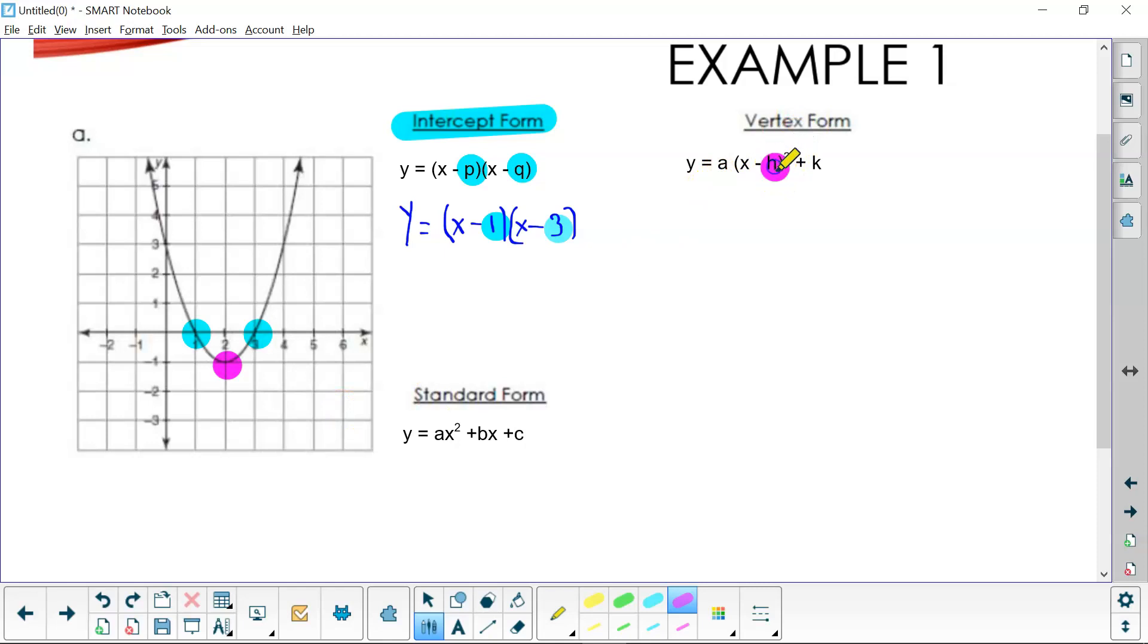My h and my k are what's going to come into play here. y equals, now my a, we haven't stretched or compressed this graph, so my a is just one, so I'm not going to write a one. (x - __), my x value for my vertex is two, so I'm going to put a two in here, squared, plus. Would it be plus? Did my graph go up or did it go down? My y value is a negative one, so it's not going to be plus, it's going to be minus one.